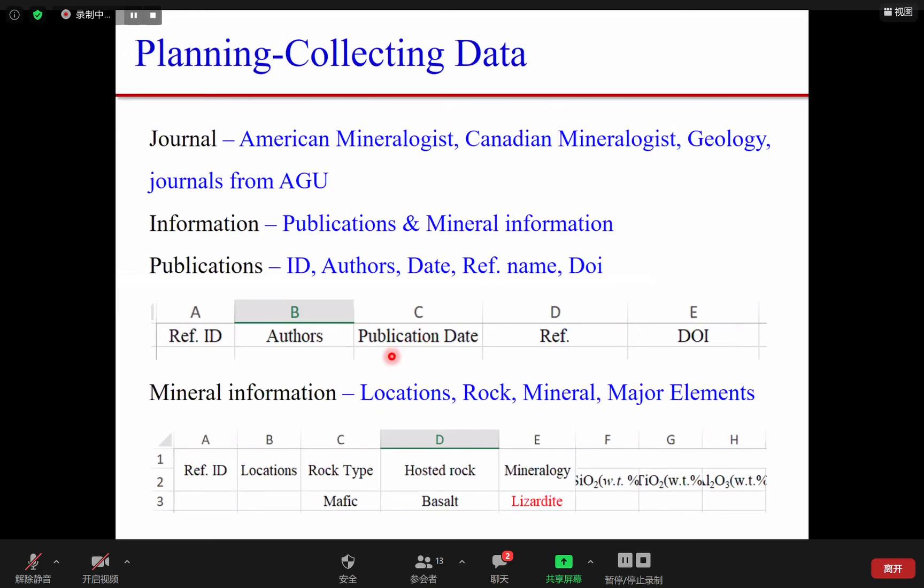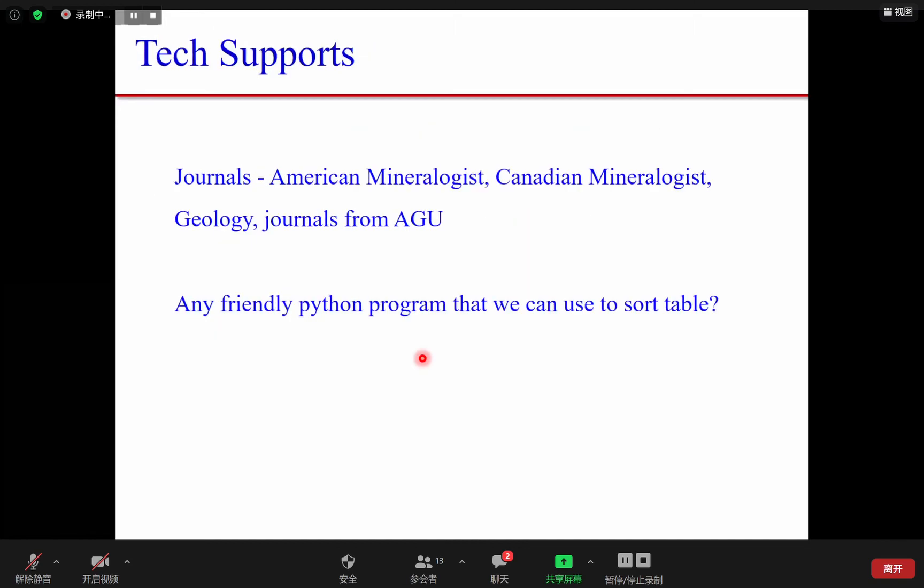Information we are going to collect includes publications and mineral information. I'm going to create two spreadsheets linked by the reference IDs. Mineral information is mostly locations, coordinates if possible, rock types, specific rock name and mineralogy, and also the major elements composition of the minerals.